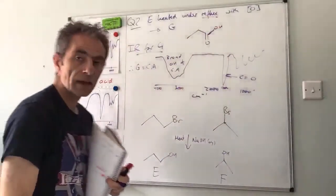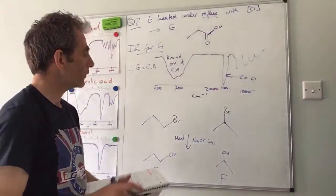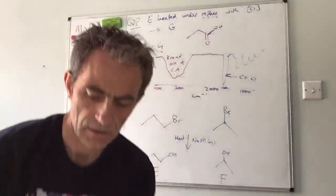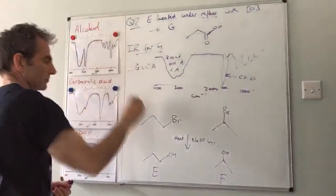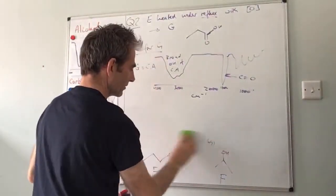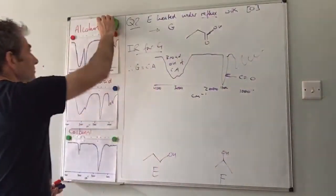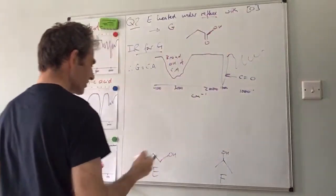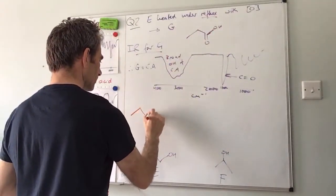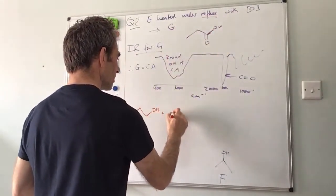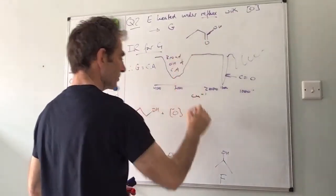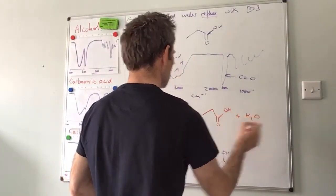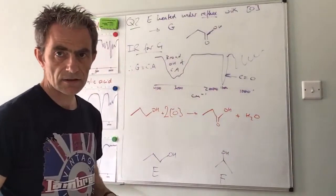So that was the answer for G. And then the only other thing was you had to write an equation for the formation of G from E. So we're oxidizing E under reflux with oxidizing agent. So E, propan-1-ol, plus O in square brackets gives propanoic acid, one mole of water, two moles of oxidizing agent.